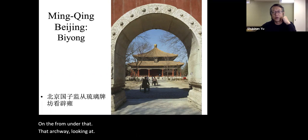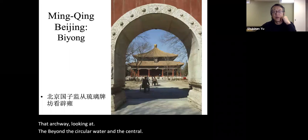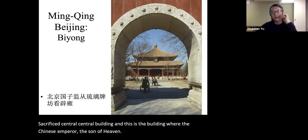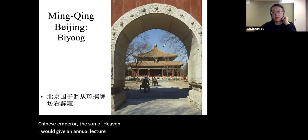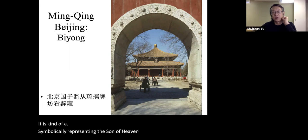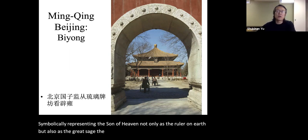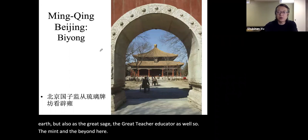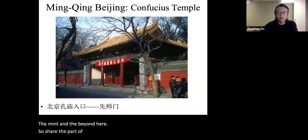Looking from under the archway, beyond the circular water and toward the central sacred building — the Biyong — this is the building where the Chinese emperor, the Son of Heaven, would give an annual lecture to students of the Imperial University. It symbolically represents the Son of Heaven not only as the ruler on earth, but also as the great sage and educator. So the Biyong here shared part of the function of the previous Mingtang.